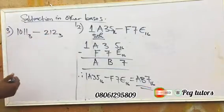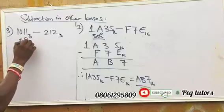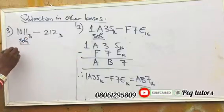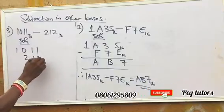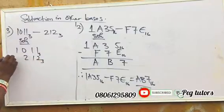How do we do this? So solution, as usual, we use the same method. 1, 0, 1, 1. And this is 2, 1, 2. Base 3, base 3. We subtract.